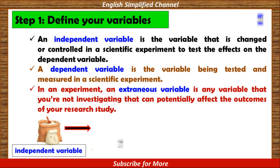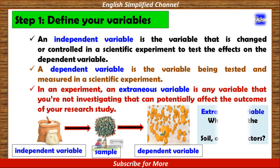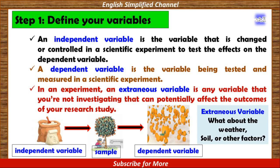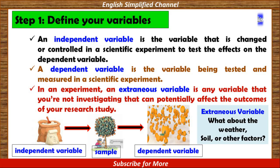See this example. Suppose you are doing an experiment to prove whether a fertiliser is good to increase the fruit of orange. In this case, the fertiliser is the independent variable, because it is the source of the effect on the orange plant, while the number of oranges is the dependent variable. After giving the fertiliser, questions arise: is the increase truly only because of the fertiliser, or perhaps because the weather is suitable for the orange to produce fruits, or because of the soil or other factors? Those other factors are the extraneous variables.